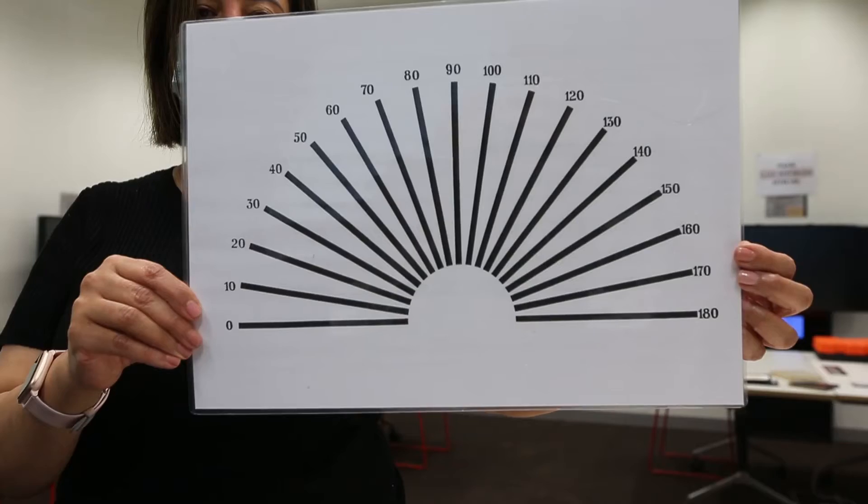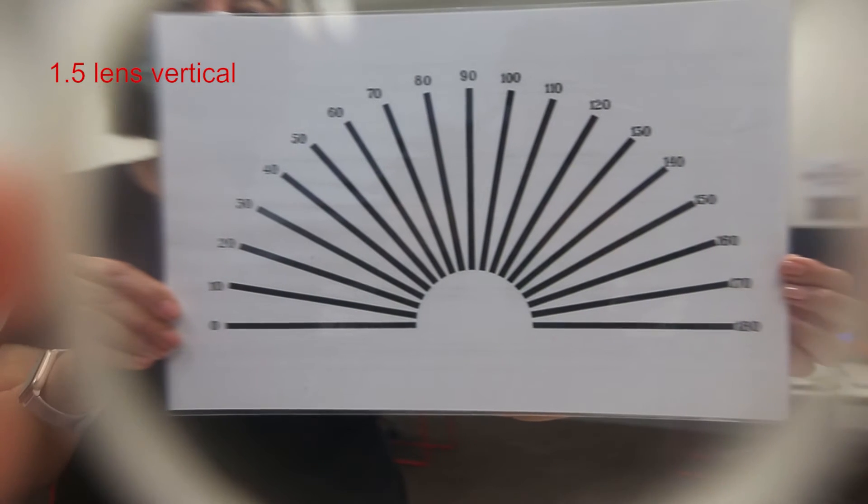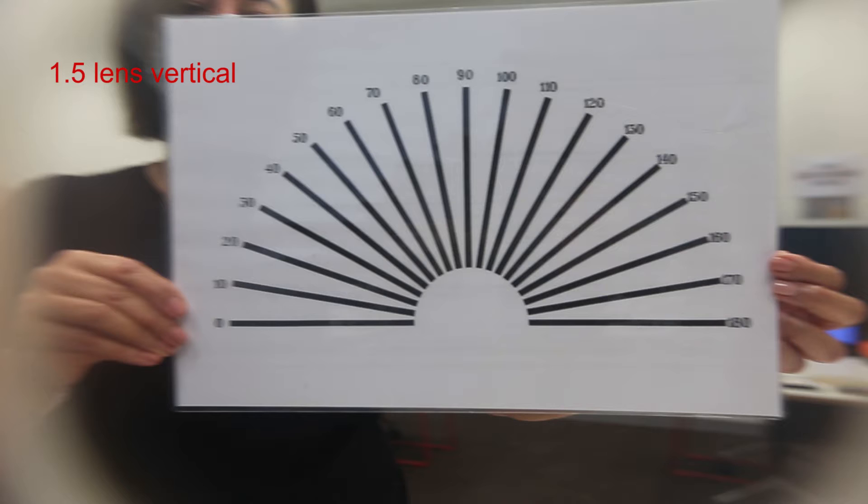Here you can see what the chart looks like when viewed through the astigmatism lens. Now at the moment the lens is oriented vertically. I'm not going to say what I see but have a look at this image and see which lines you think are more or less blurred. If any of the lines are blurred then make a note of which angles you think are affected.